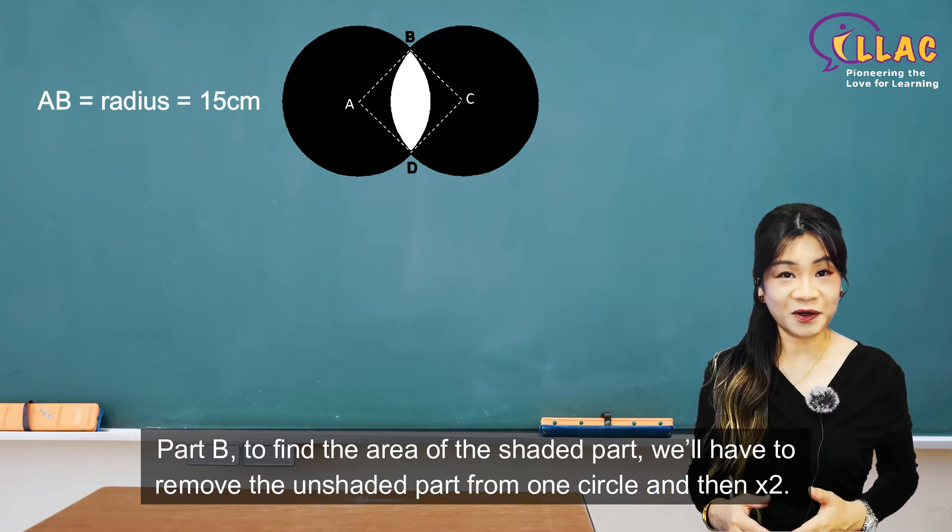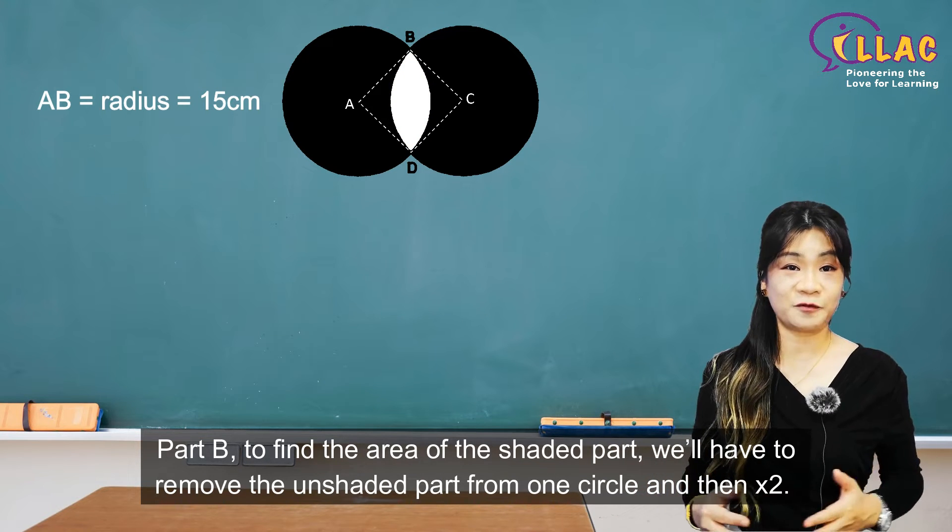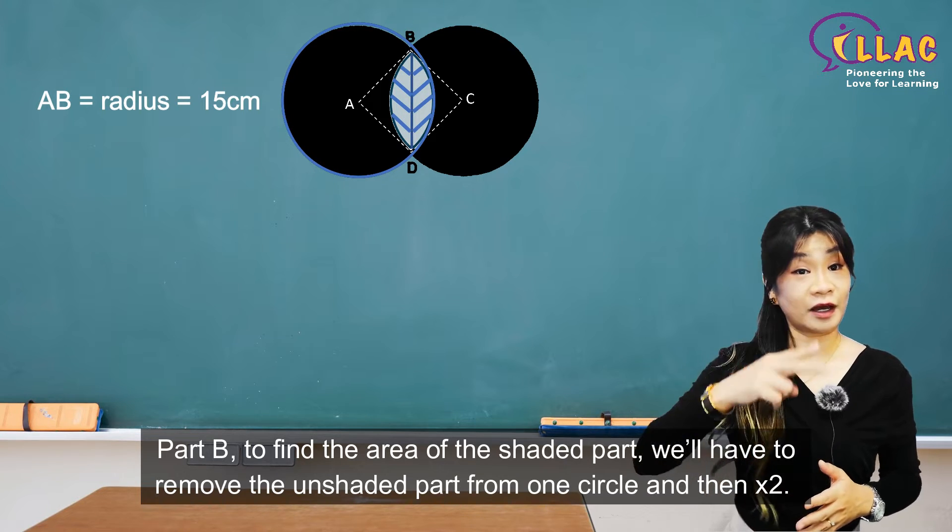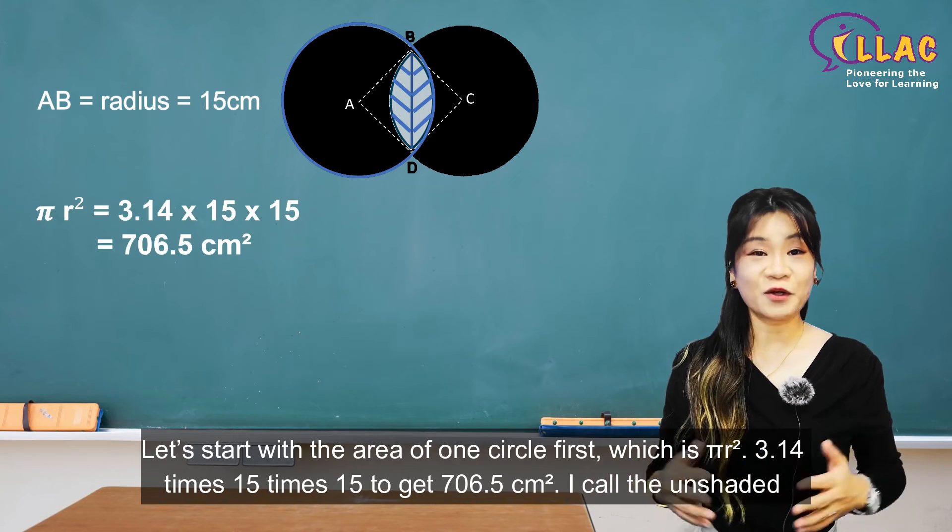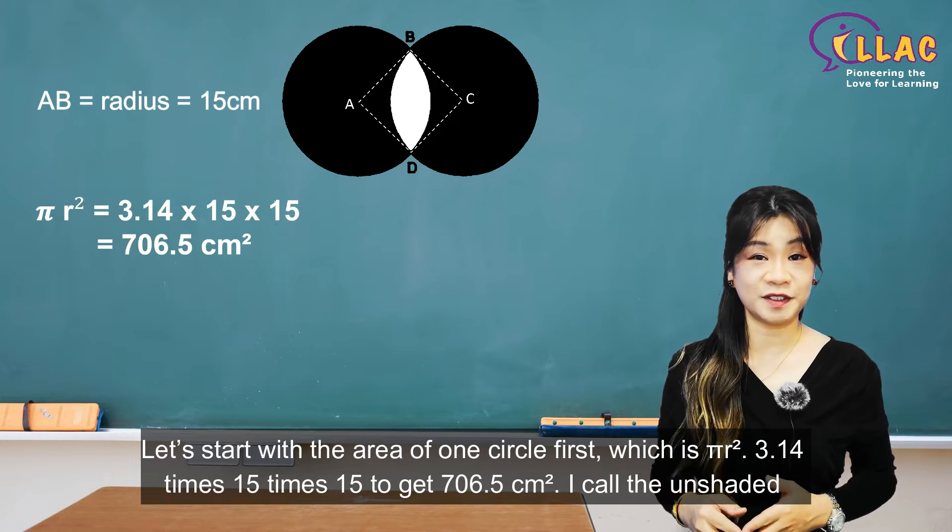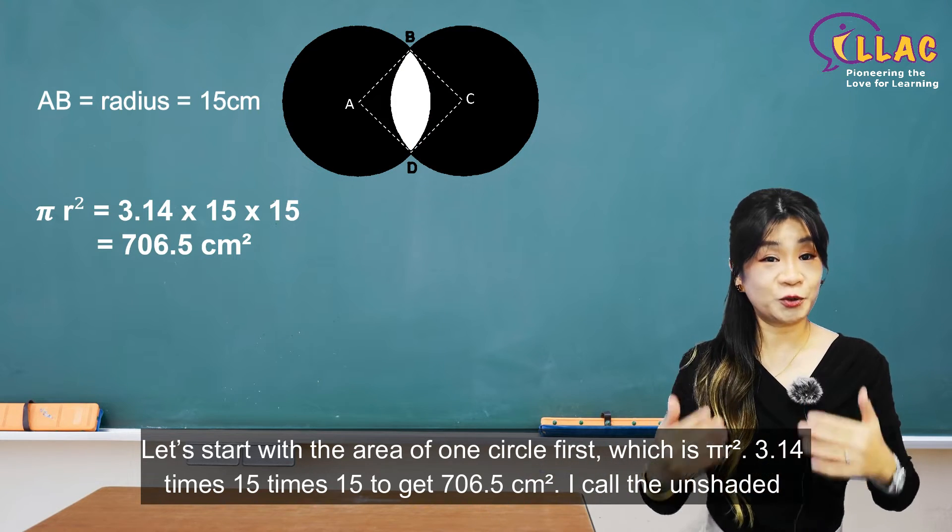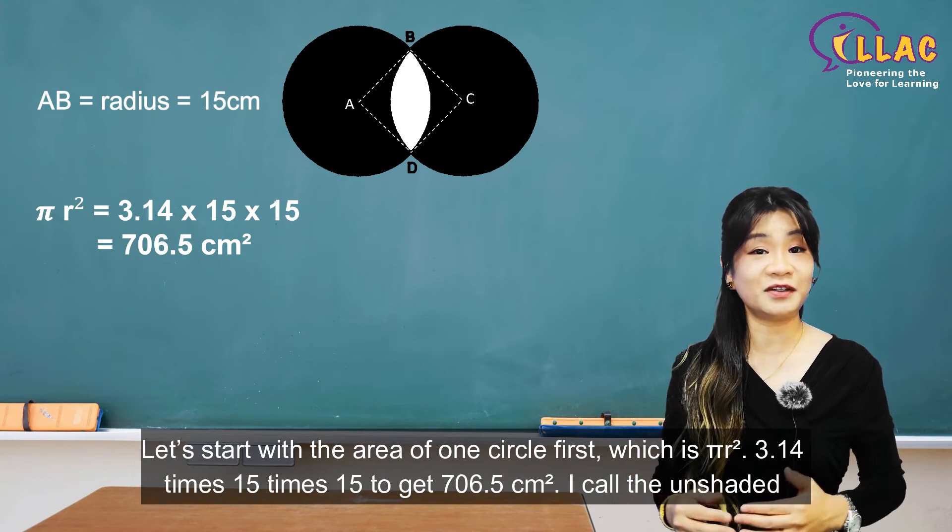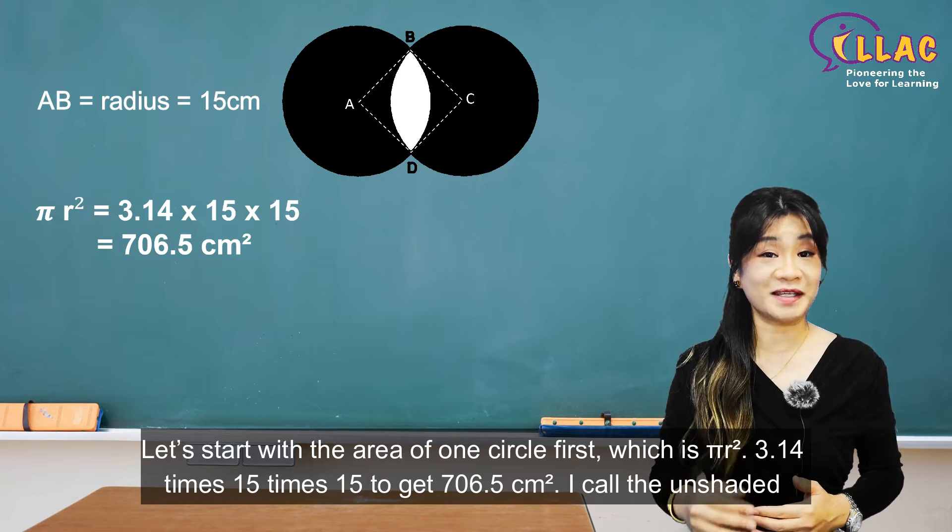Part B, to find the area of the shaded part, we will have to remove the unshaded part from one circle and then times 2. Let's start with the area of one circle first, which is pi R square. 3.14 times 15 times 15 to get 706.5 square centimeters.